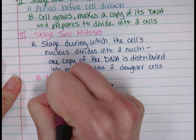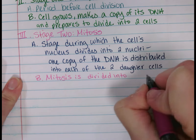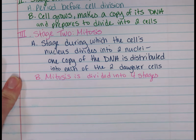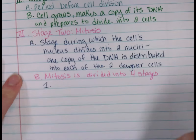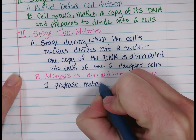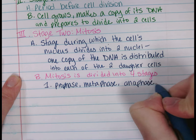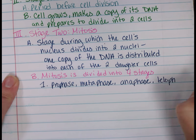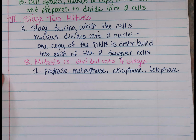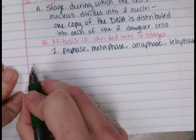Big letter B: mitosis is divided into four phases, or stages. Number one: prophase. Number two: metaphase. Number three: anaphase. Number four: telophase. So PMAT. Hopefully if you watched that Amoeba Sisters video, you realize they were talking about PMAT, which is just what this is.